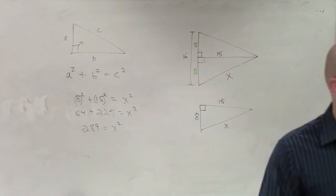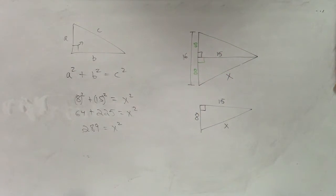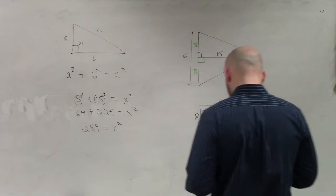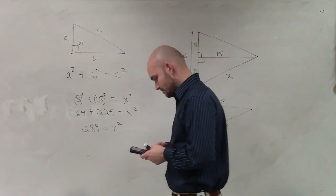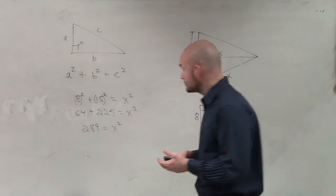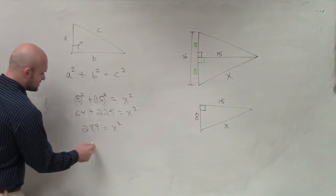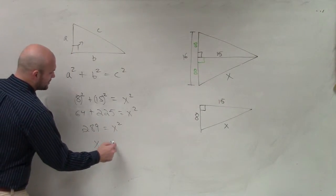And let's see if I can simplify that any further. And the square root of 289 is 17, which I did not have memorized yet. So x is going to equal 17.